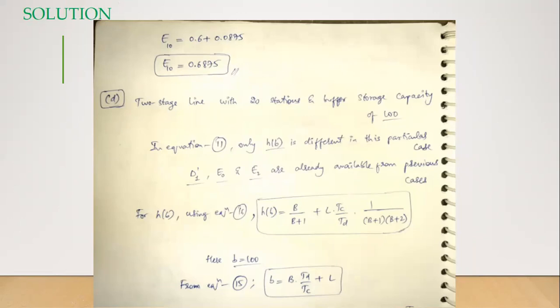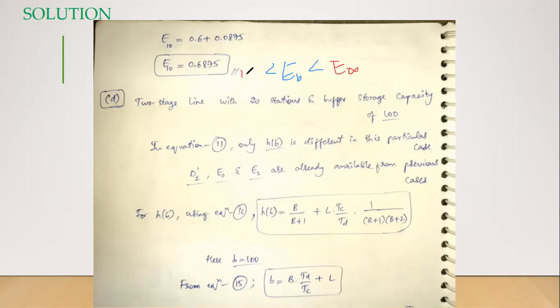We discussed that the efficiency for a storage capacity b lies between no buffer storage capacity and the infinite one — E_b is in between E_infinity and E_zero. That's confirmed: between 60% and 75%, we have 68.75% for a buffer storage capacity of 10. Now we'll see for 100 how much the improvement is.